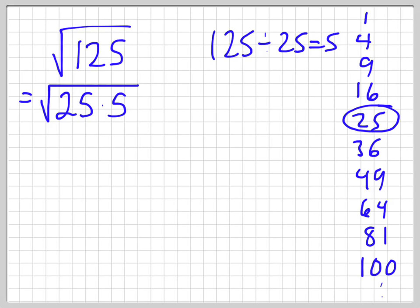So now that I have this broken up, I also know that I can use one of my rules, which is I can break this guy up into two different roots. Basically you can put a root sign over both and separate it with a multiplication sign. And what that allows us to do is we can take the square root of 25, which is 5. And root 5 is not a perfect square, so we'll leave that alone. So that becomes 5√5.